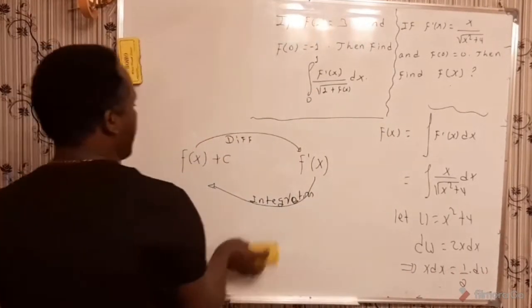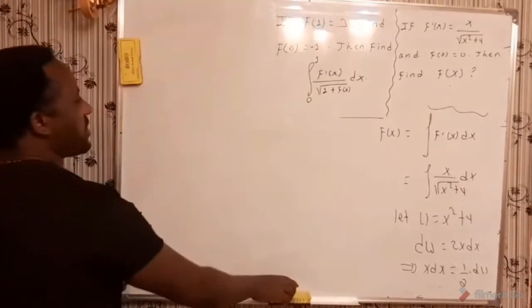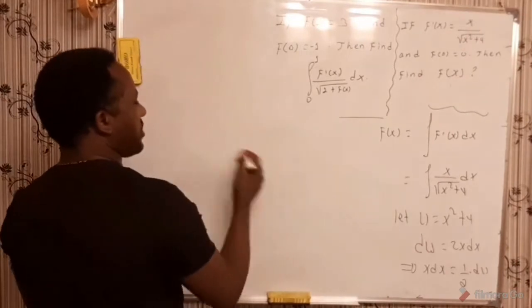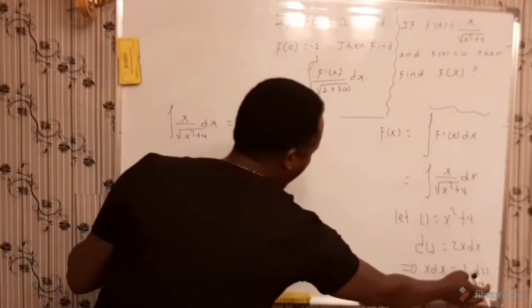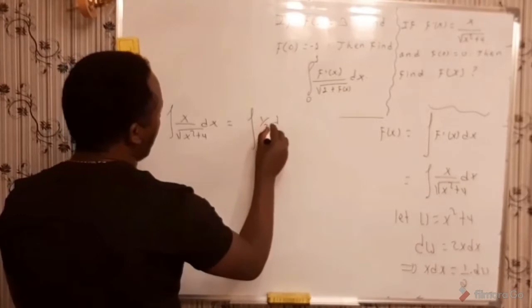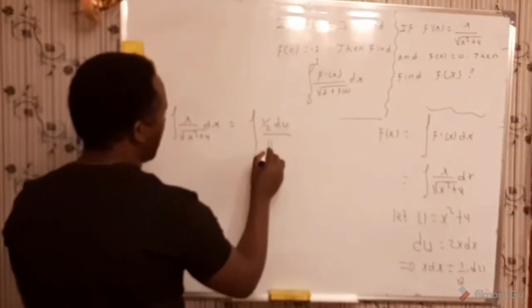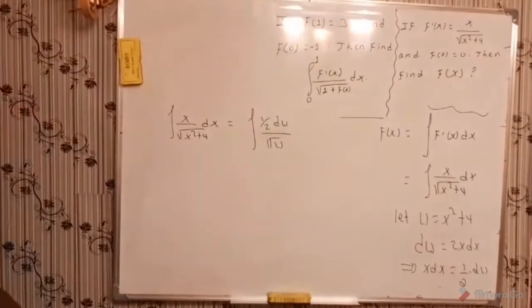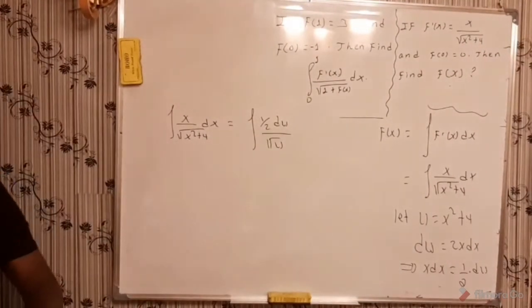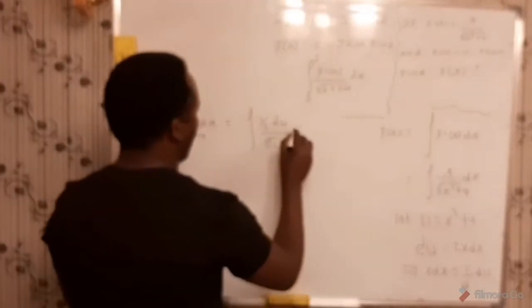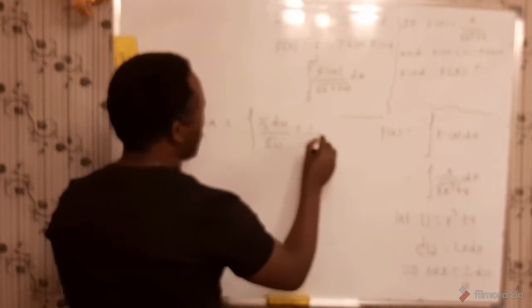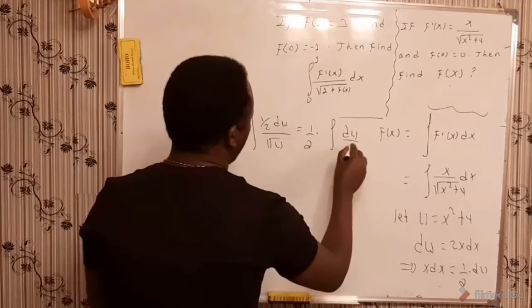Based on this substitution, the integral of x over x squared plus 4 dx is immediately replaced by the integral of one over 2 du over u — that is, x dx is replaced by one over 2 du, and x squared plus 4 is replaced by u. Since any constant is independent of the integral, this is already given by one over 2 times the integral of du over u.